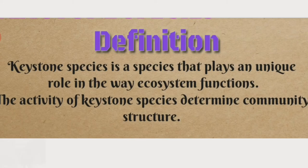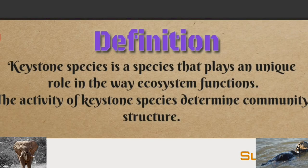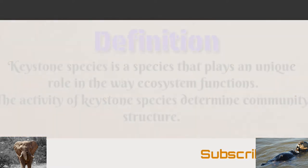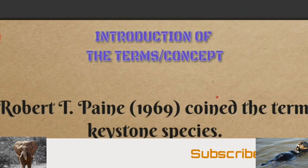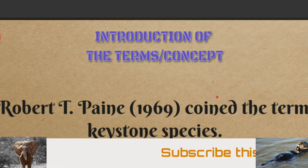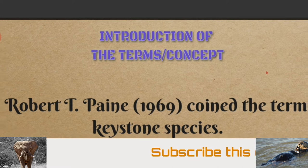A keystone species is a species that plays a unique role in the way an ecosystem functions. The activity of keystone species determines community structure. The concept was introduced by American ecologist Robert T. Payne in the year 1969.